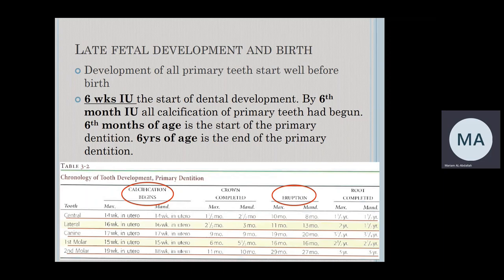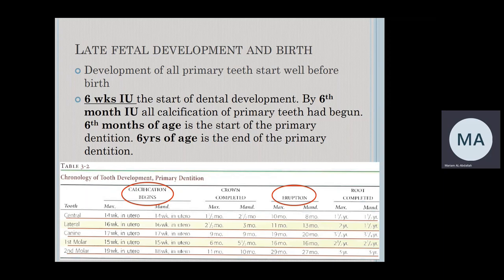During late fetal development, all primary teeth begin developing well before birth. When we say dental development, this is not calcification — this is the start of development stages before calcification. By the sixth month of intrauterine life, calcification of all primary teeth had already begun, starting around four months intrauterine. At six months of age after birth, we will have the start of eruption of the first primary tooth. At six years of age, the primary dentition ends as the first permanent tooth starts to erupt.